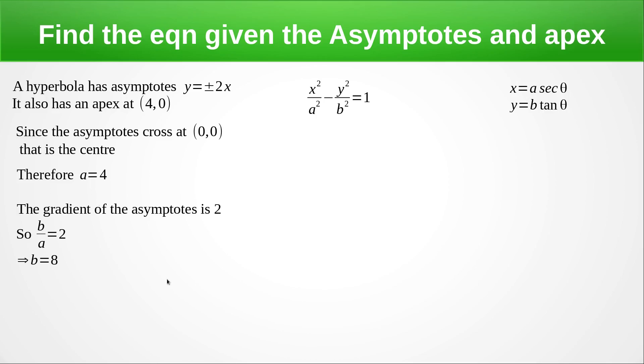Now we've got a and b. I can just substitute them into this equation to get the Cartesian form and into this equation to get the parametric form.